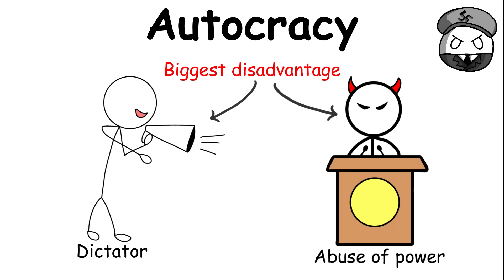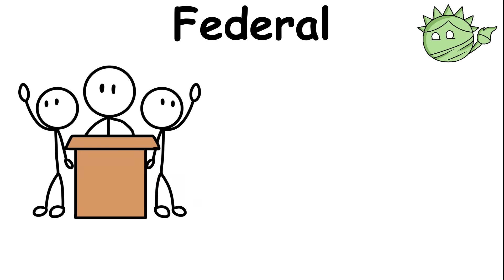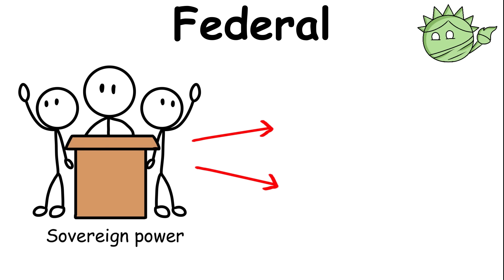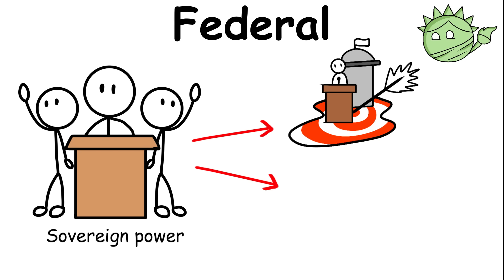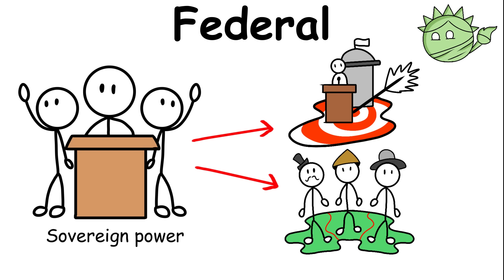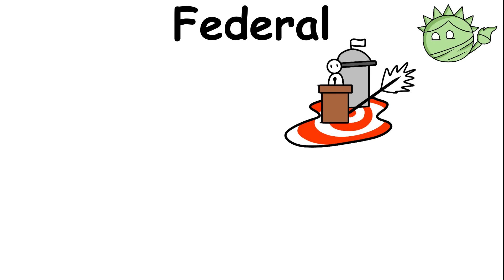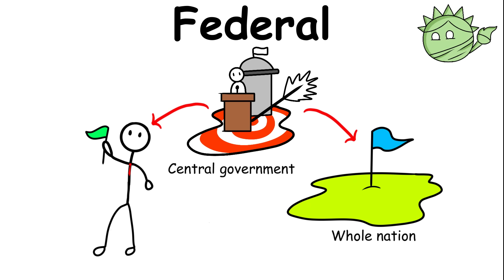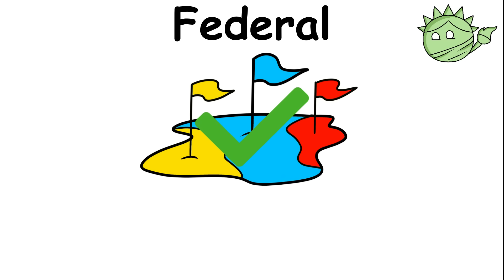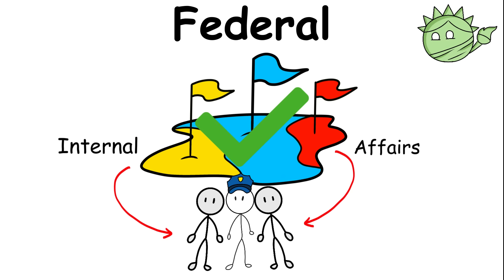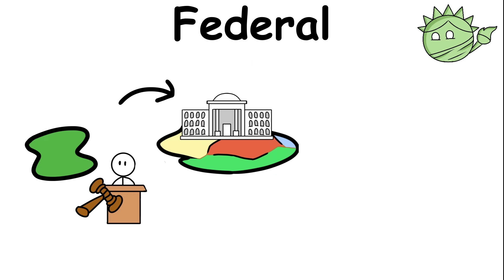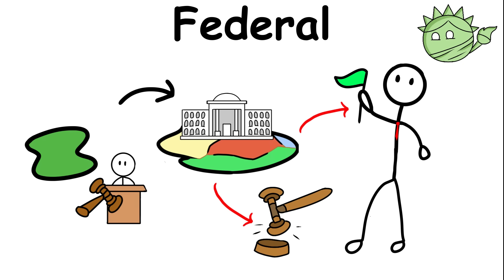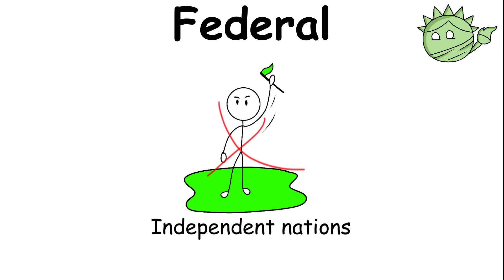Federal governments formally divide the sovereign power between a central government and the regions that form part of the country. The central government is still the leader of the whole nation, but allows the different regions or states to have control over their internal affairs. These states can have their own leaders and laws, but are not independent nations.